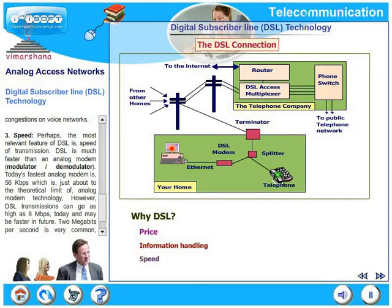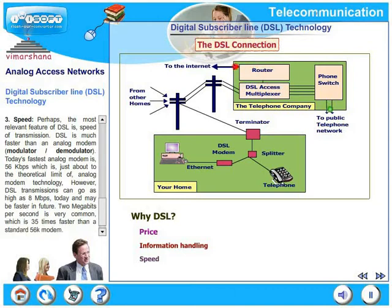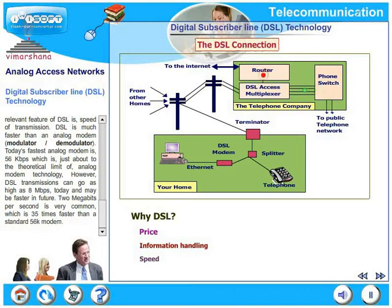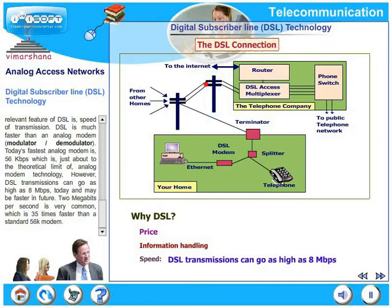The third advantage is, of course, speed. Perhaps the most relevant feature of DSL is the speed of transmission. DSL is much faster than any analog modem. Today's fastest analog modem is 56 kbps, which is just about the theoretical limit of analog modem technology. However, DSL transmissions can go as high as 8 Mbps today and may be faster in future.